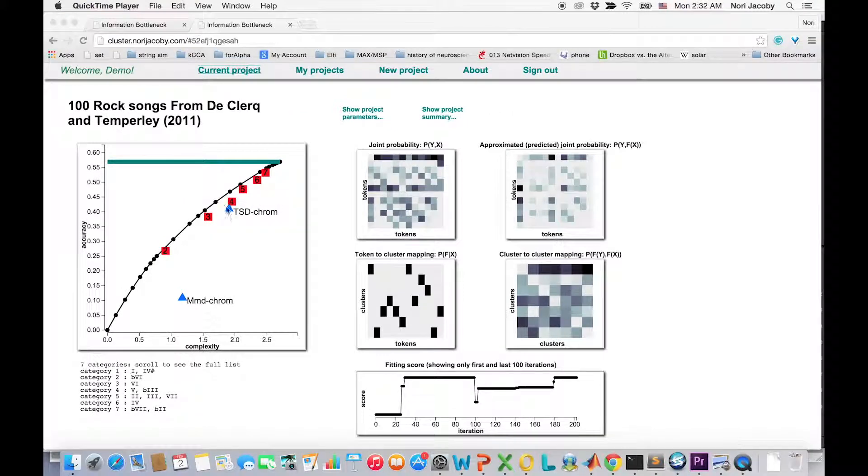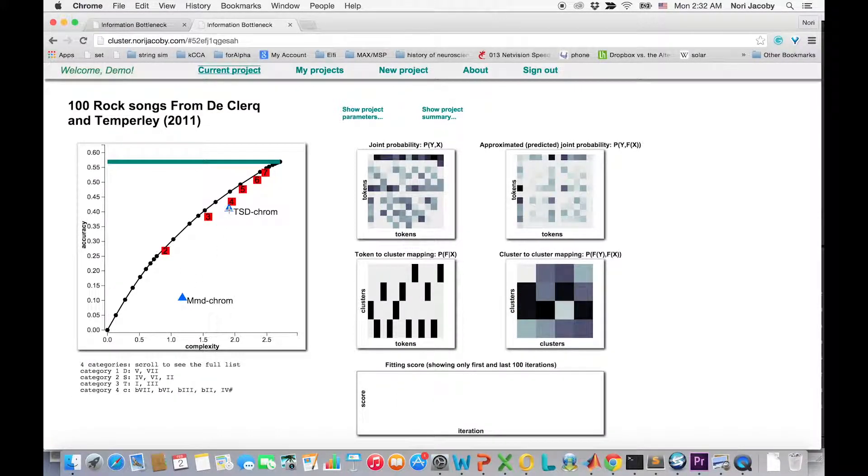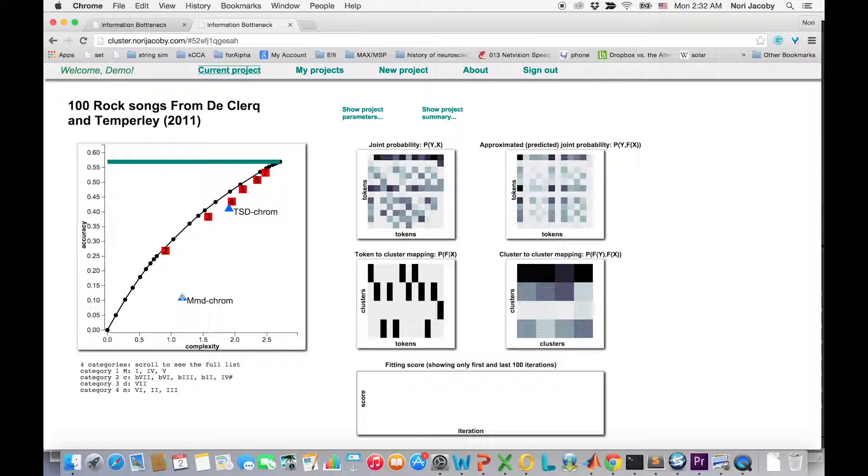And we can see that basically the relation between the categorization scheme of tonic, subdominant, and dominant in major, minor, diminished holds also here. And this is interesting because this corpus has a chord distribution which is different from the one of Bach chorales.